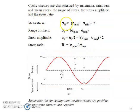First we calculate the mean stress: sigma mean equals sigma max plus sigma min divided by 2. The stress range is sigma max minus sigma min. Stress amplitude sigma a equals sigma r divided by 2. The stress ratio r equals sigma min divided by sigma max.